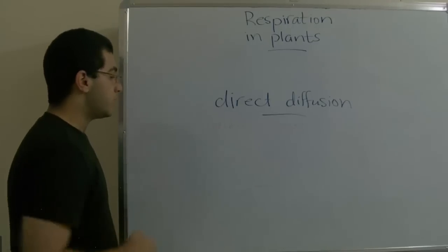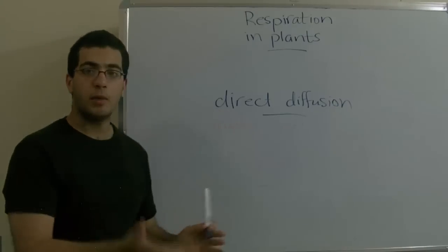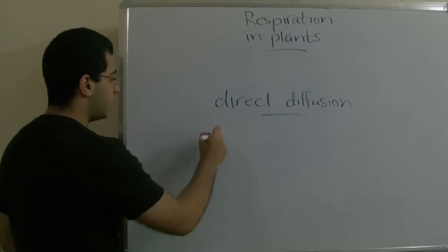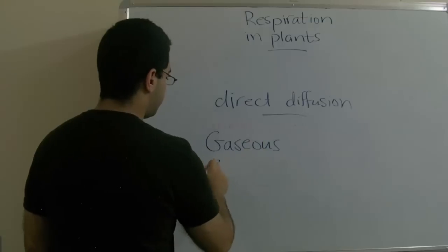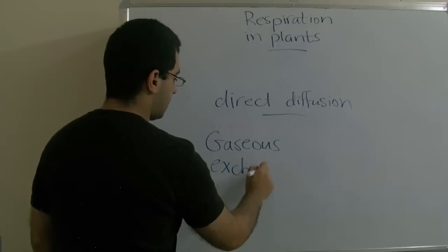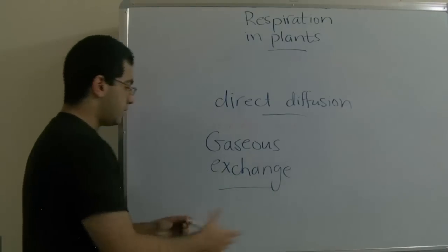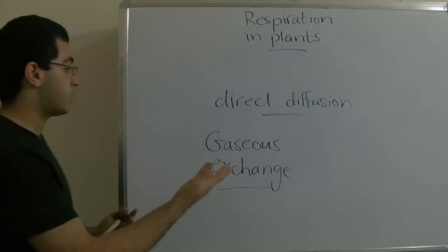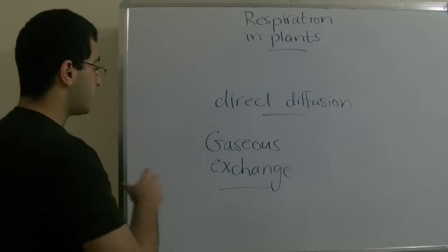So this is respiration in plants—obtaining oxygen and getting rid of carbon dioxide. This process is called gaseous exchange, as there is an exchange which happens so the plant trades oxygen for carbon dioxide.